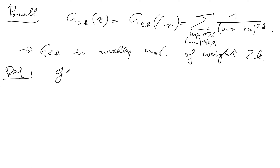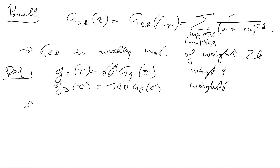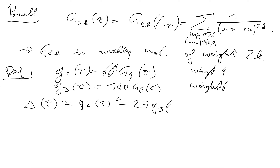Using g₂ and g₃ we define the modular discriminant Δ(τ) = g₂(τ)³ − 27·g₃(τ)², which is the discriminant of the defining equation of the elliptic curve. This is a weakly modular function of weight 12.